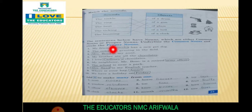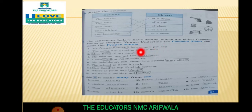The sentences below have nouns which are either common noun or proper noun. Underline the common noun and circle the proper noun. नीचे कुछ words दिए गए हैं जिन में से common nouns भी हैं और proper nouns भी हैं। आपने underline करना है common nouns को और circle करना है proper nouns को।